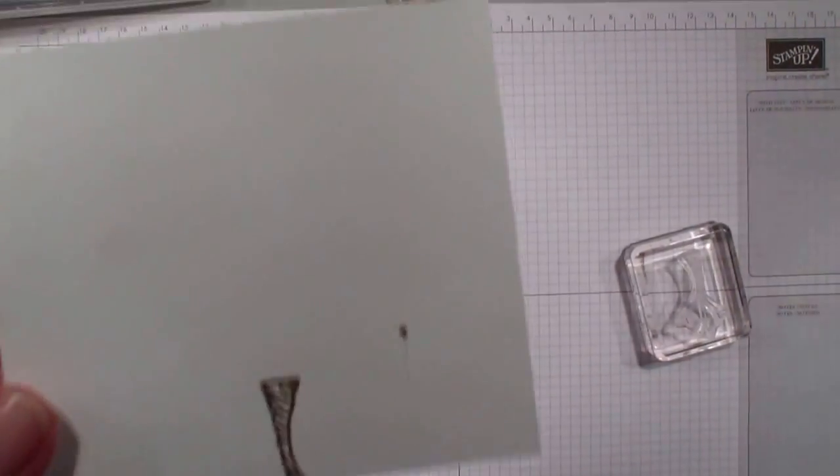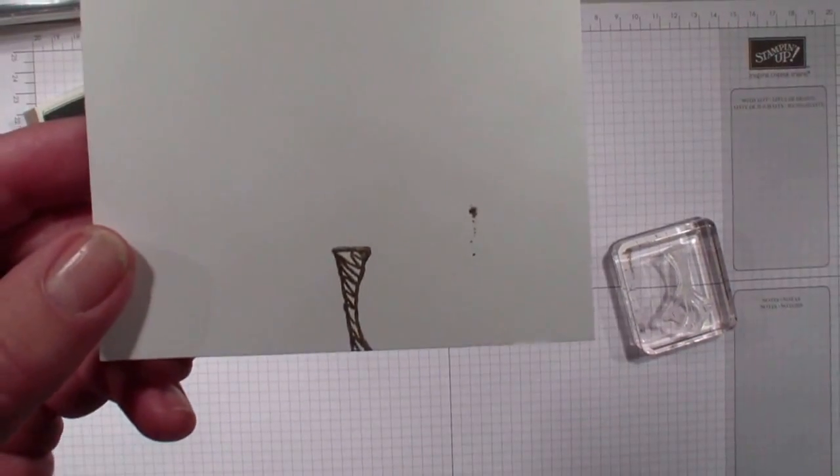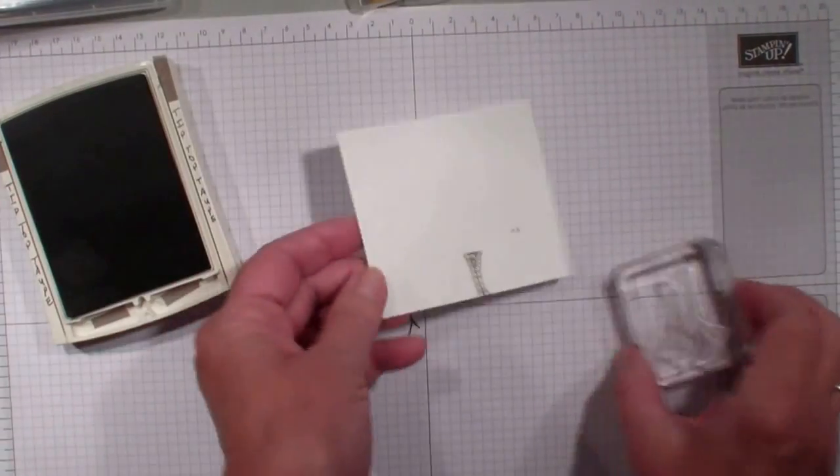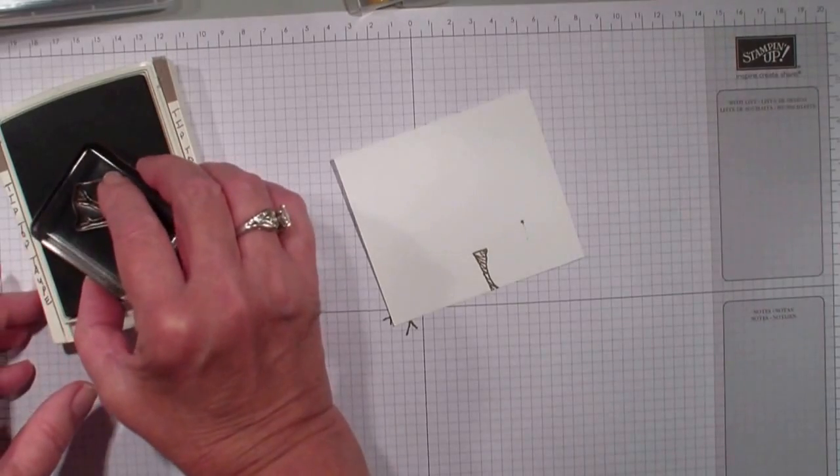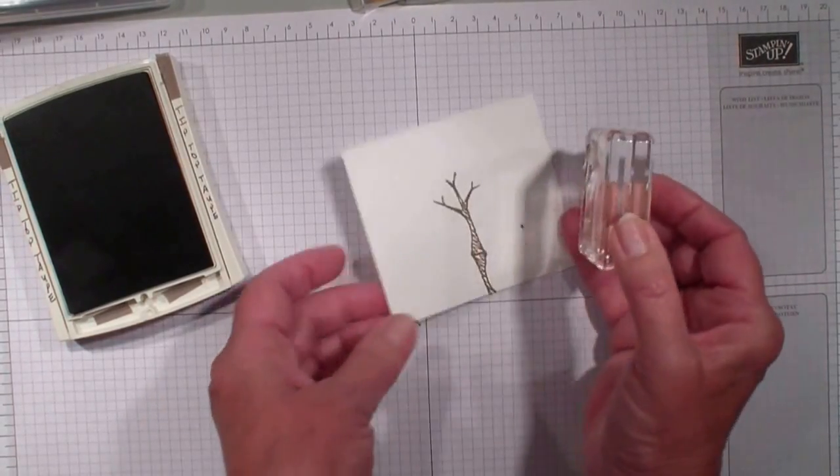I only stamped and I got a little smudge there but this is just showing you how to do it. You don't care that there is a smudge there. I have got my tree upside down. I am going to ink that stamp again and now I am going to put it right on top of that stub.